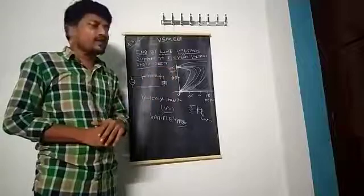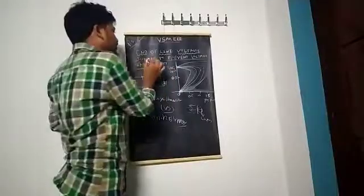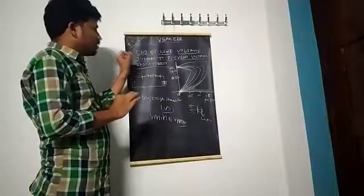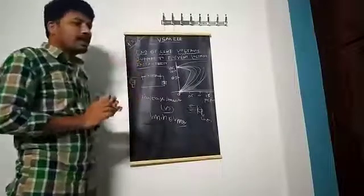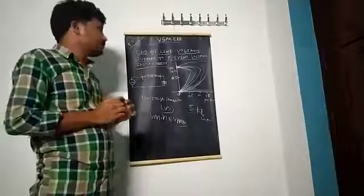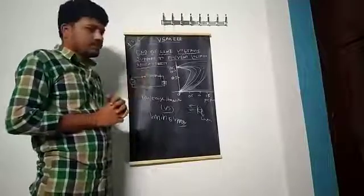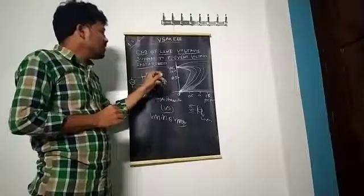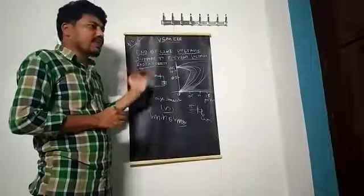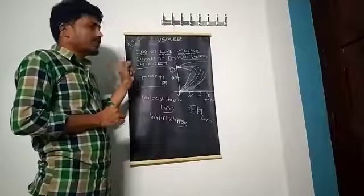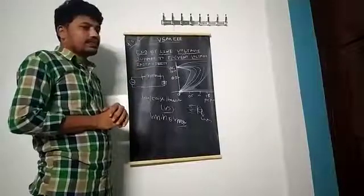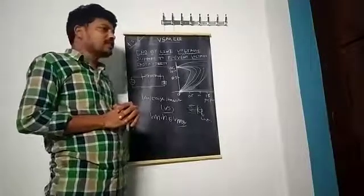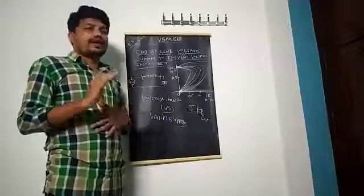We need some extra method to remove the voltage instability problem — that method is the compensation technique. Our topic is end of line voltage support. We connect the compensation technique at the end of the line because in a radial transmission system, voltage instability issues and voltage imbalances occur especially at the end of the line. To prevent this voltage collapse, generally we connect a compensation device at the end of the line, near the load.